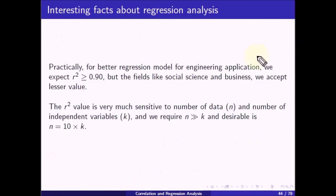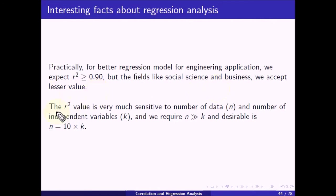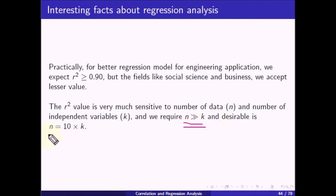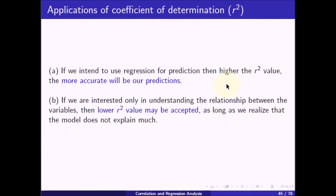Practically, for engineering applications, we expect R-squared to be greater than or equal to 0.90. In fields like social science and business, lower values are accepted. R-squared is sensitive to the number of data points n and the number of independent variables k. We require n to be much greater than k, with the desirable condition being n greater than or equal to 10 times k.